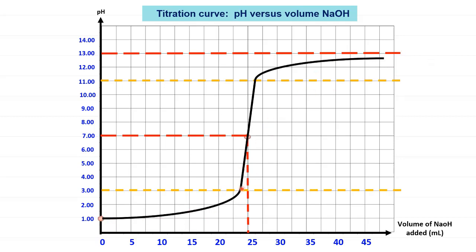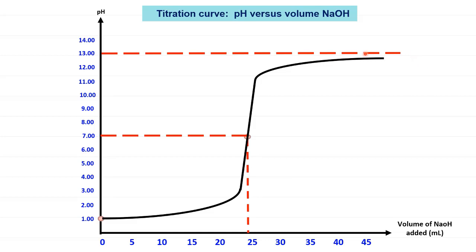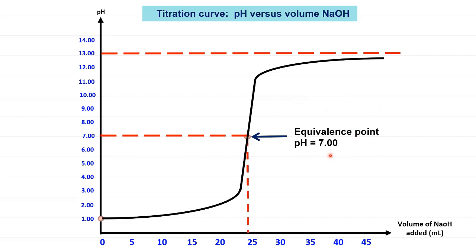Your titration curve will start from below because the analyte is an acid. As the reaction proceeds, more and more base is added, so the pH goes up. If you start from the base, then the curve should start from above going downhill. Don't forget to label your equivalence point pH on the diagram, which is 7.